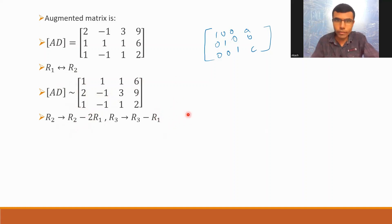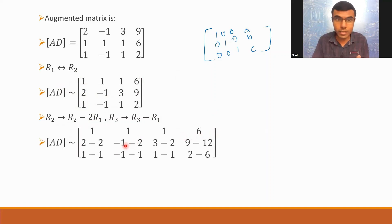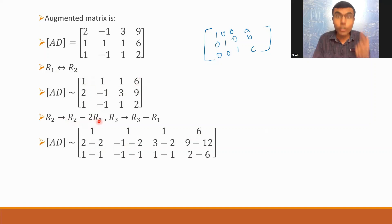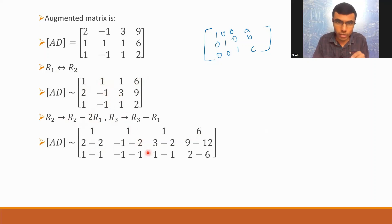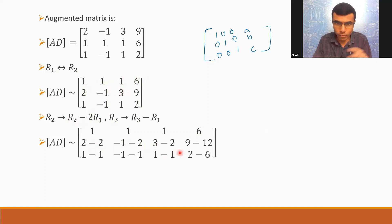I'm going to show you the intermediate step also — you won't find this shown anywhere else. Everywhere you are given just the row operation and the next answer, but this intermediate step is not shown. For R2 implies R2 minus 2R1: multiply the first row by 2, so 2 minus 2 is zero; minus 1 minus 2 gives minus 3; 3 minus 2 gives 1; and 9 minus 12 gives minus 3. For R3 implies R3 minus R1: 1 minus 1 is zero; minus 1 minus 1; 1 minus 1; and 2 minus 6.